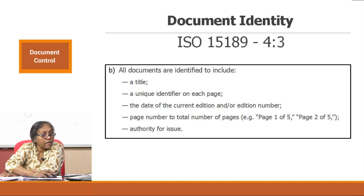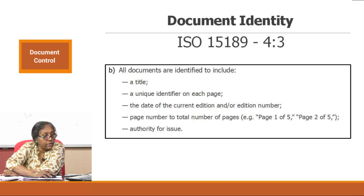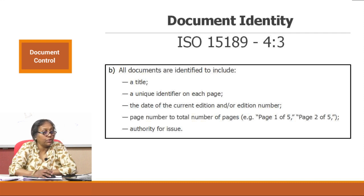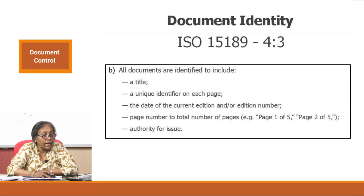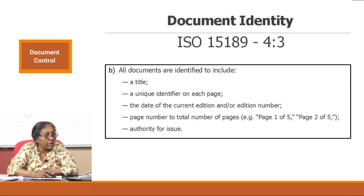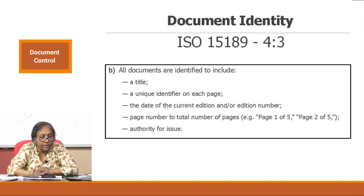All documents are identified to include: the title, a unique identifier on each page, the date of current edition and/or edition number - it is always better to have both - page number to the total number of pages (example: page 1 of 5, 2 of 5), and authority of issue. These five elements become part of your identification of the document. We will talk about the title and unique identifier first, then move on to other aspects.